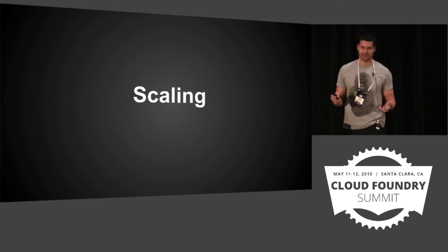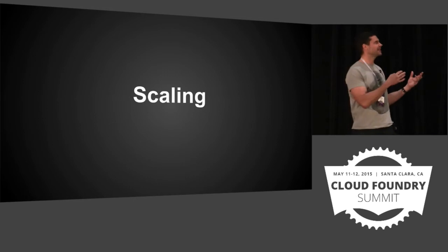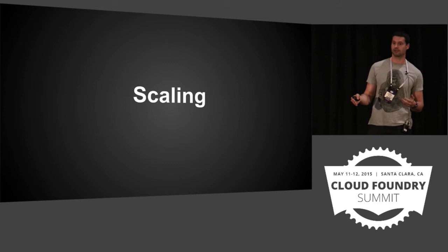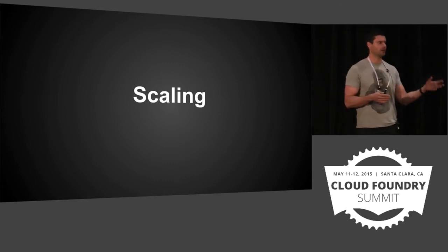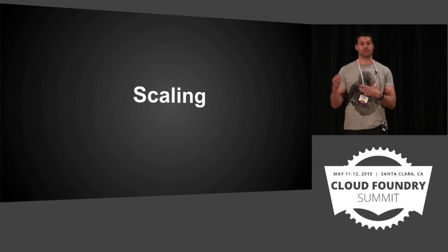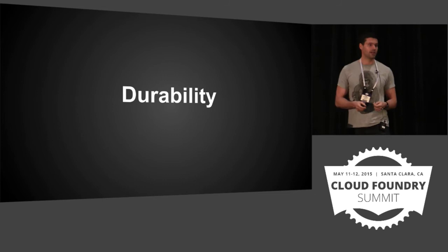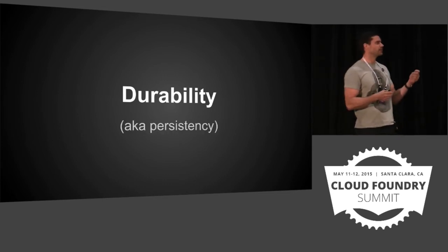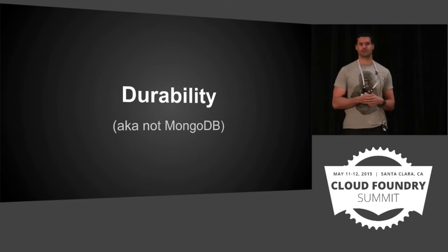Scaling — with Cloud Foundry we can scale easily with nice horizontal scaling. But what does scaling even mean for data services? Do we have more instances of the data service? A larger disk? More IOPS? This is just ambiguous — it could mean anything for different data services. And what about durability? How do we store and persist data — what does persistency mean in this context, also known as not storing your data in MongoDB?